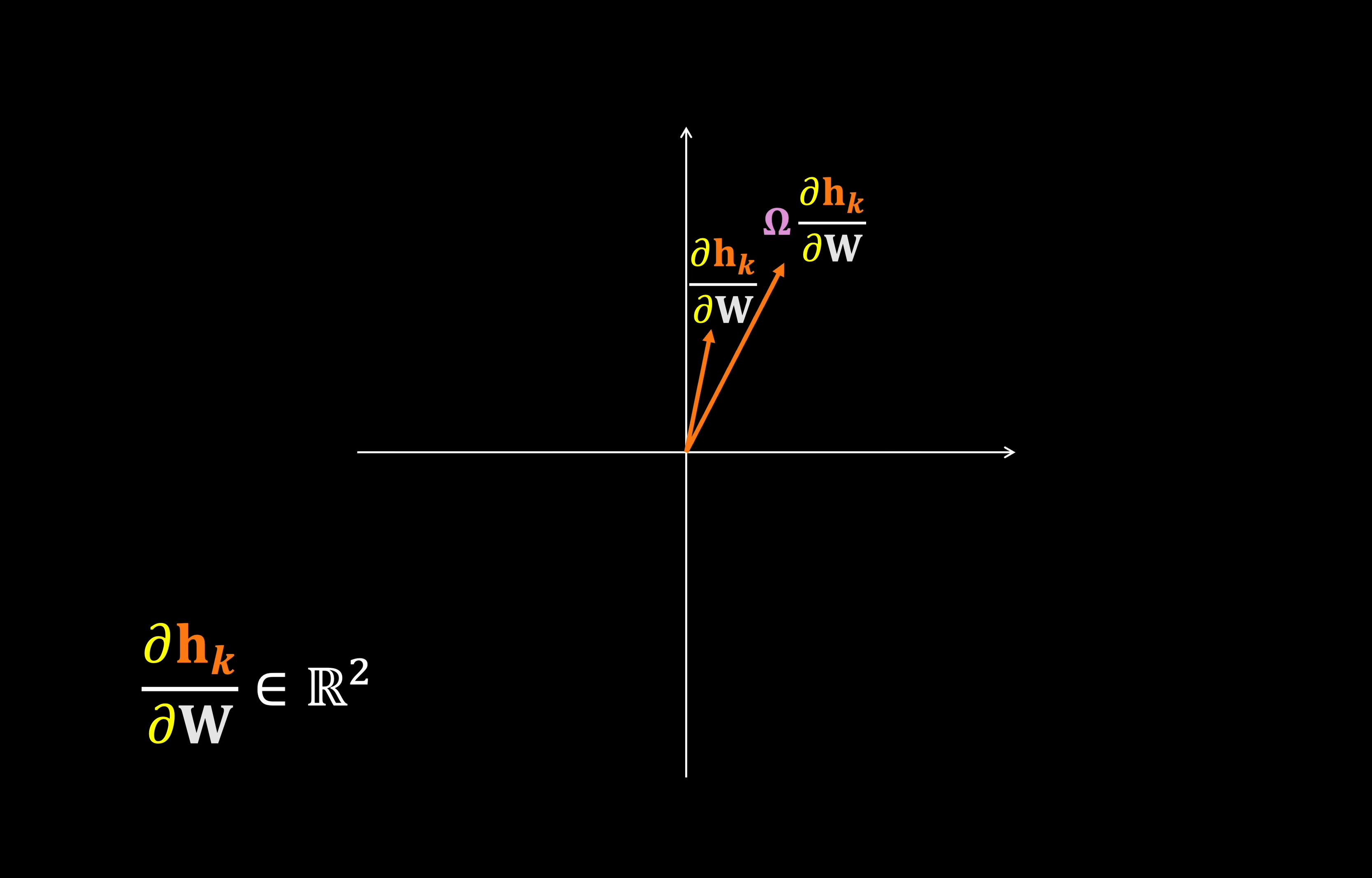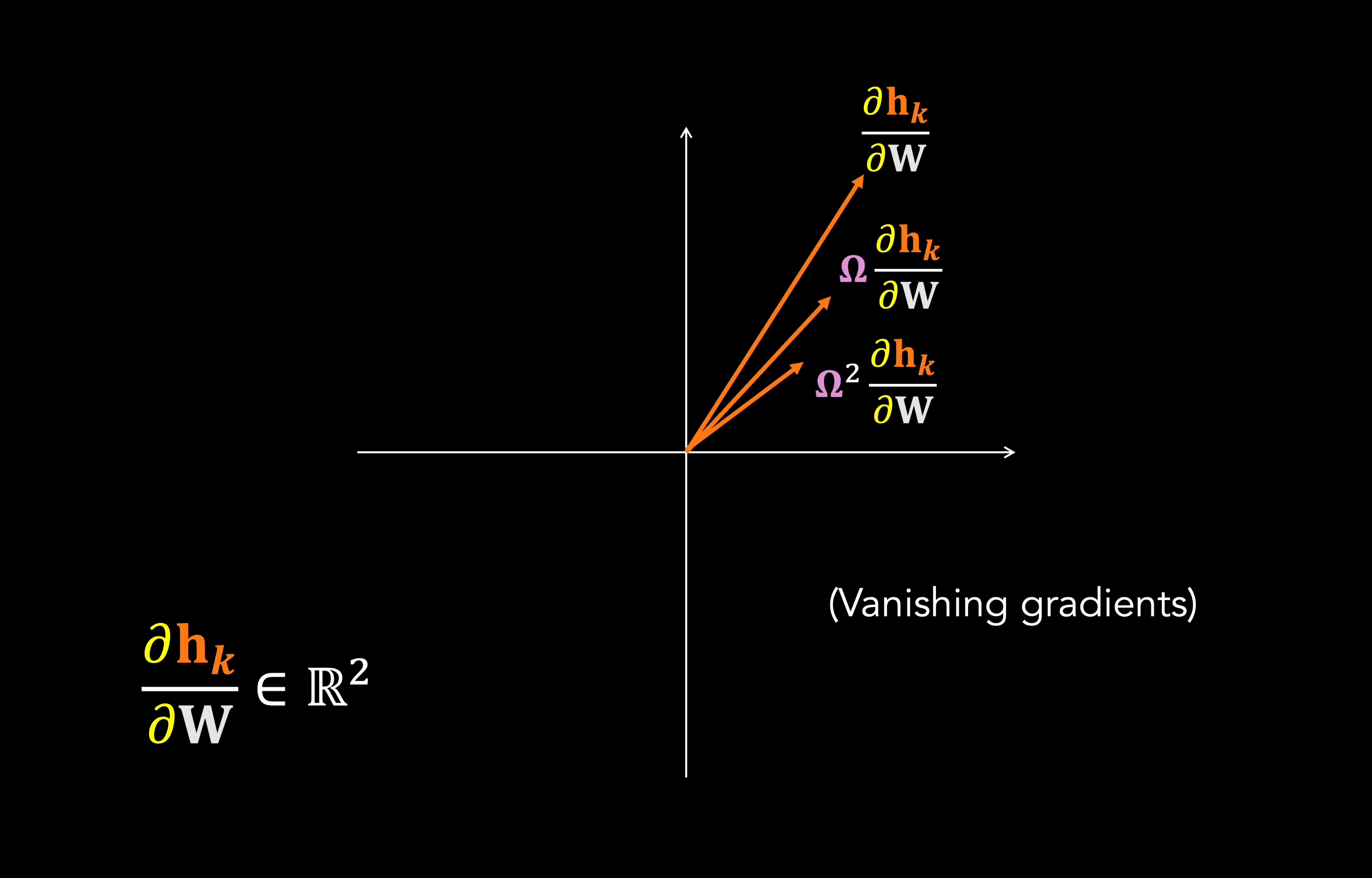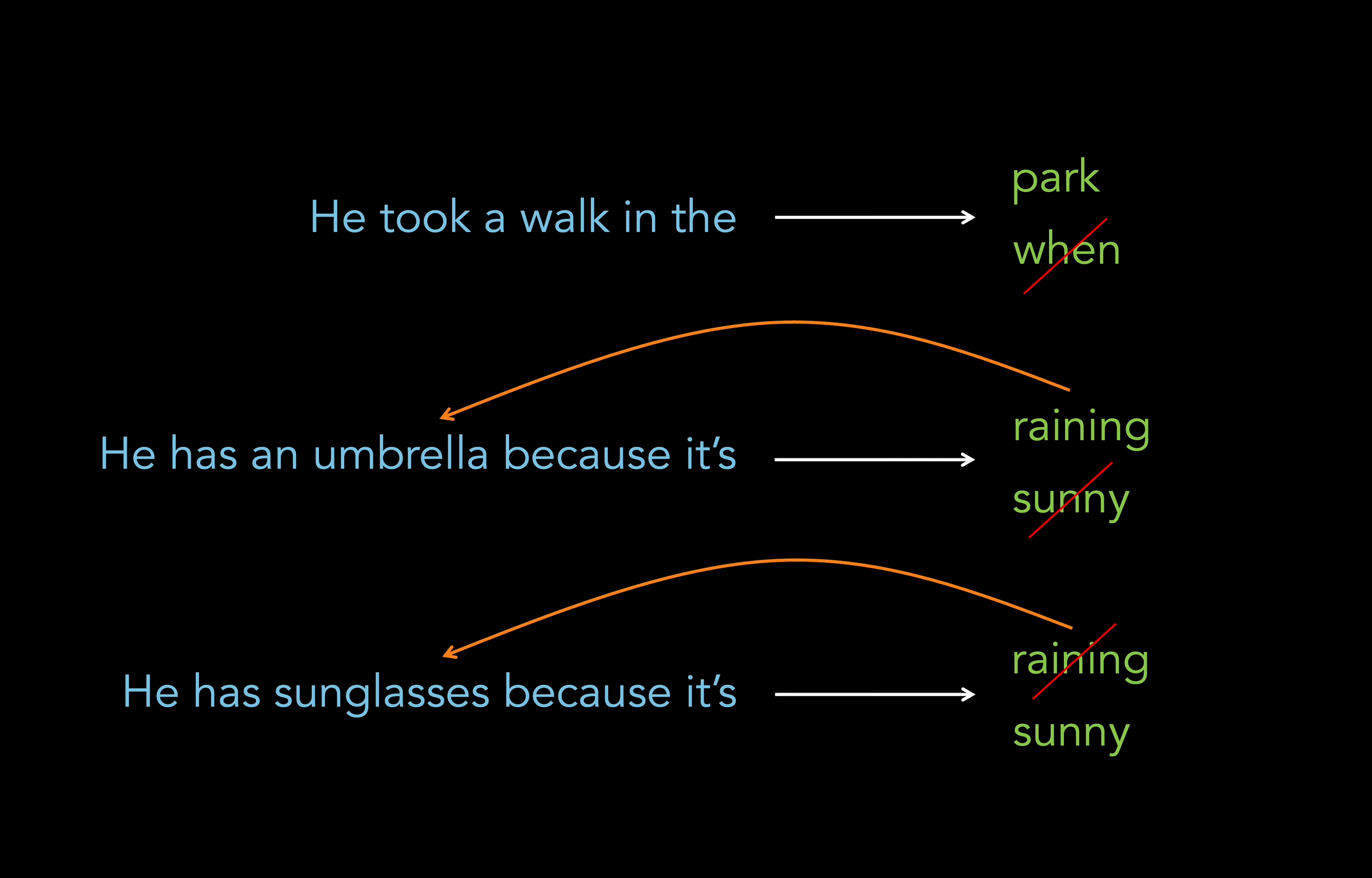Since matrix multiplication can be seen as a transformation of vector space, we can see this as the repeated application of the transformation associated with matrix omega t minus k times. This realization enables us to foresee two problematic cases. The first is where omega increases the size of the vector. Hence the vector can grow exponentially as we keep applying this operation. This is known as the exploding gradients problem, and it leads to massive instability during training.